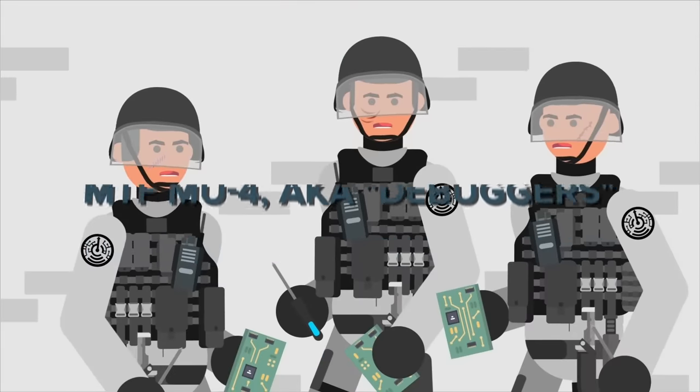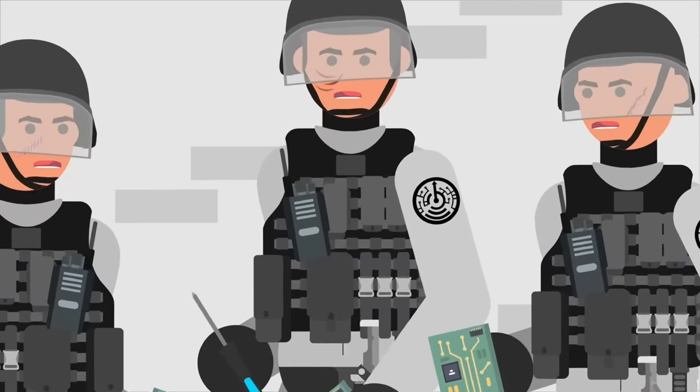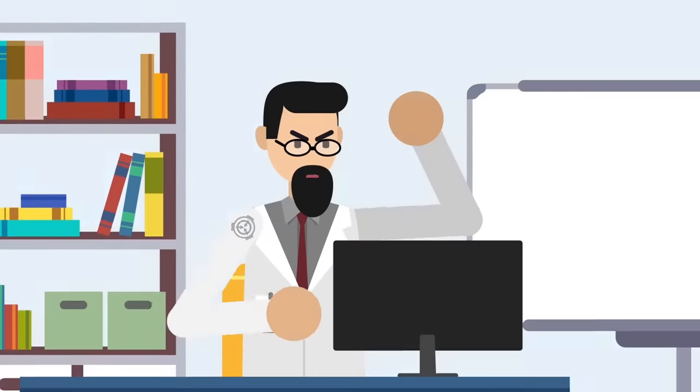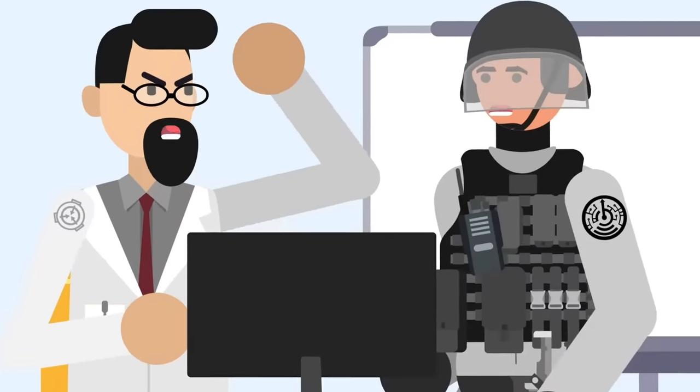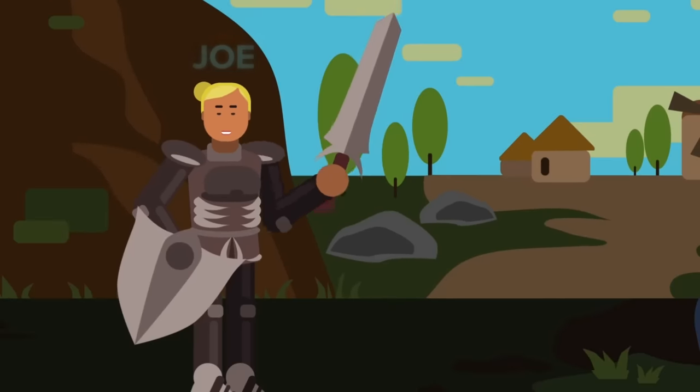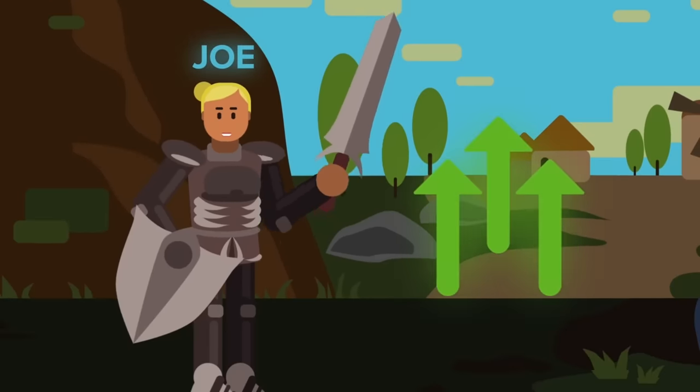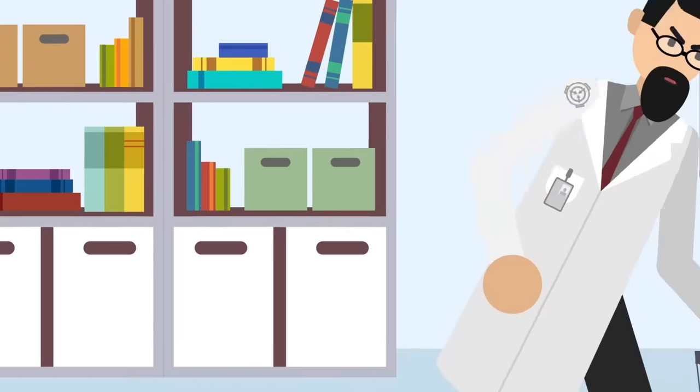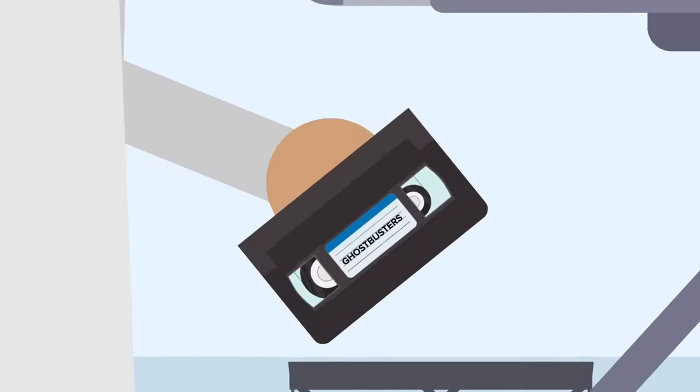MTF Mu-4, aka Debuggers, are particularly useful in the modern age as they track and contain anomalous electronics and technology, including isolating and containing anomalous websites and software. One of the anomalies dealt with by the Debuggers is SCP-896, an online role-playing game that improves the physical and mental attributes of the player when they name their character after themselves.